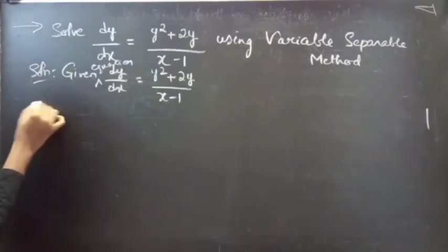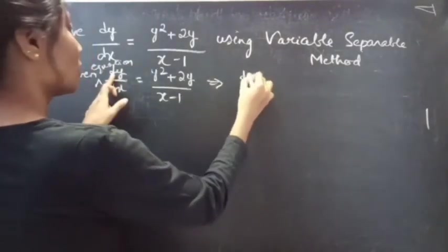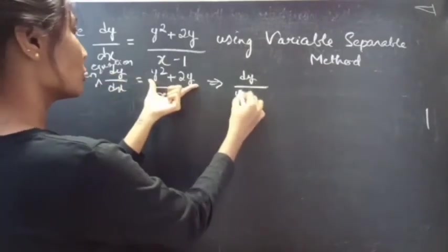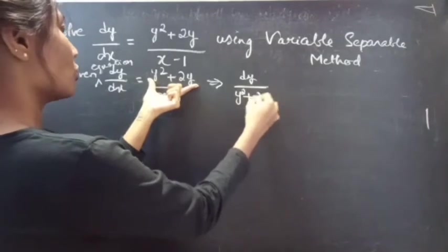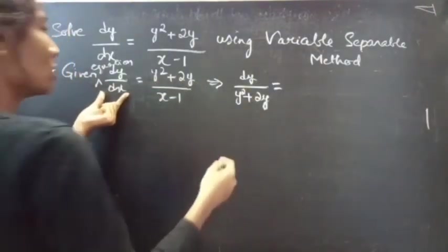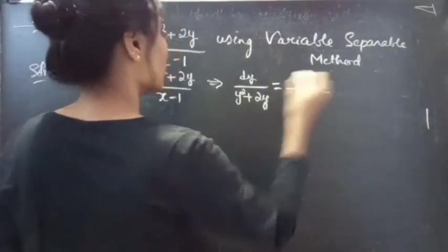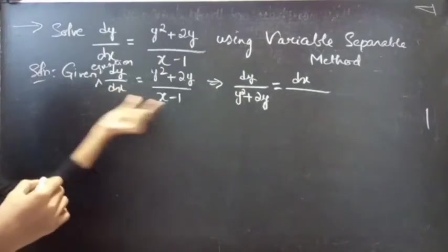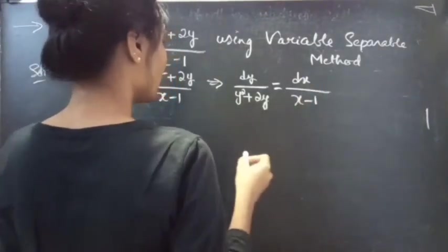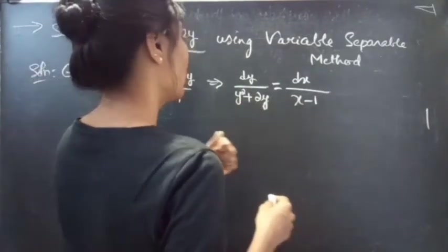So you can write it as: take the numerator of the RHS to the denominator of the LHS, and take dx to the RHS. So you are having dy / (y² + 2y) = dx / (x - 1).